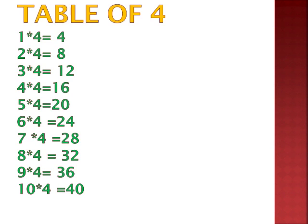Now is the table of 4. 1 fours are 4, 2 fours are 8, 3 fours are 12, 4 fours are 16, 5 fours are 20. Then 6 fours are 24, 7 fours are 28, 8 fours are 32, 9 fours are 36, 10 fours are 40.